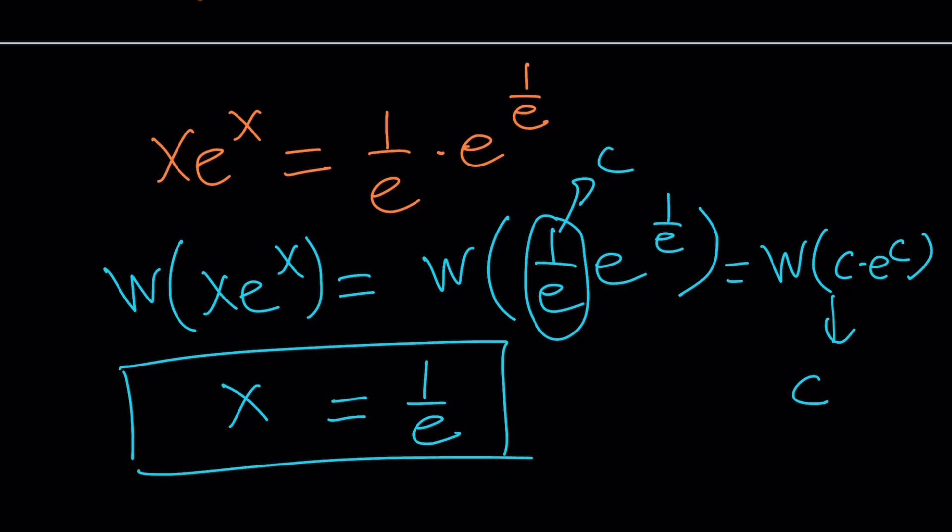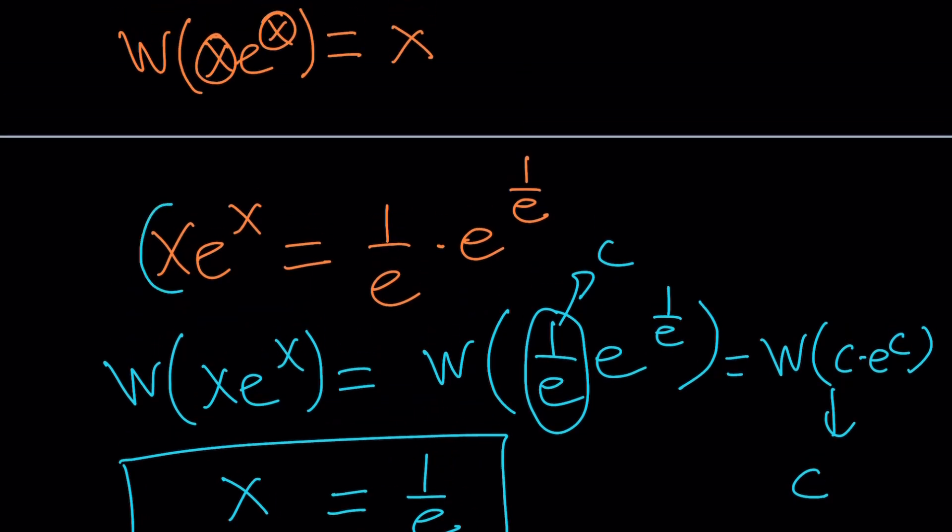And obviously, in this equation, you probably noticed that, okay, x becomes, if x is 1 over e, then we do get a true equation. Here's a million-dollar question. Is that the only solution? That's what we've got to check.